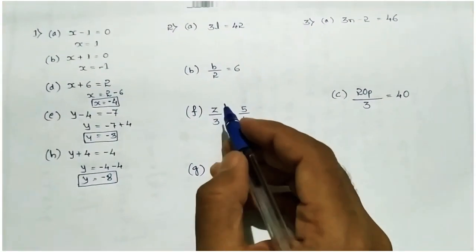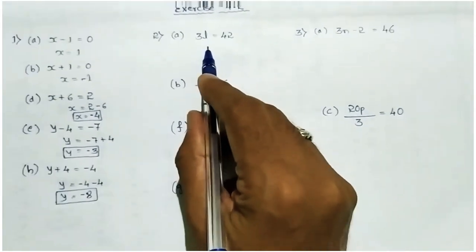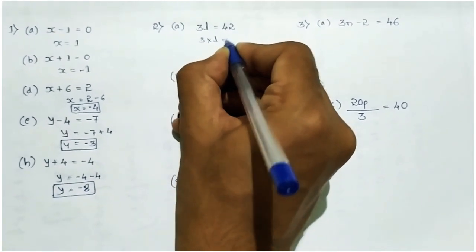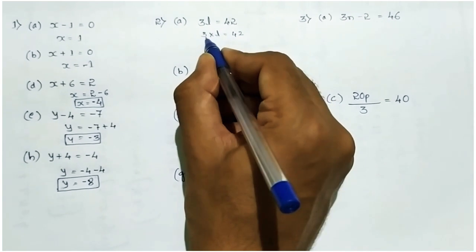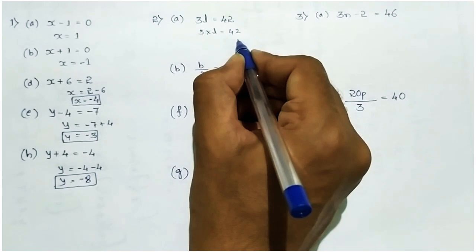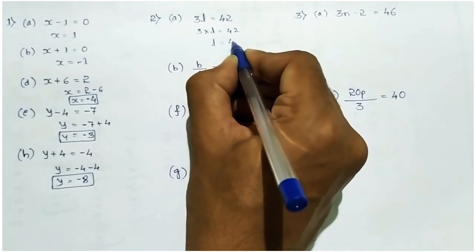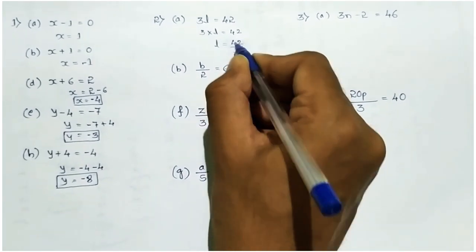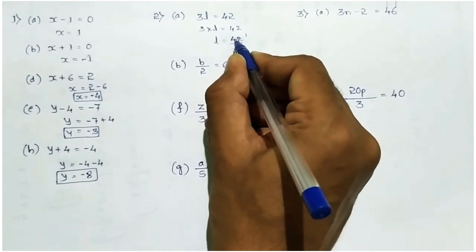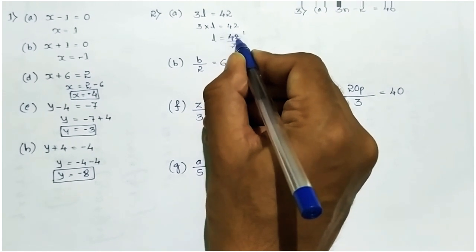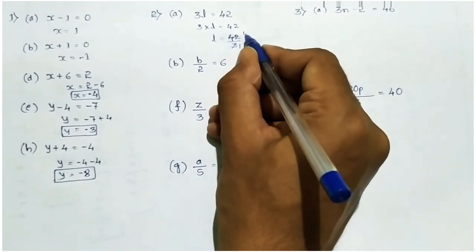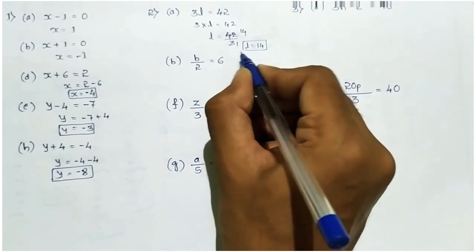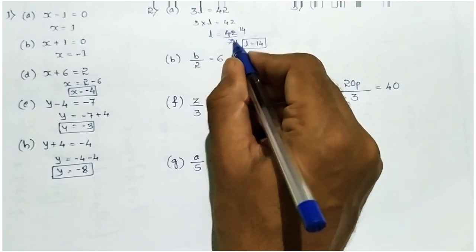Now second main — here multiplication is there. 3l means 3 into l equal to 42. If you take the multiplication number to the right side it becomes divisible: 42 divided by 3. If you cancel it — 3 ones are 3, out of 4 minus 3 gives 1, remaining 12, 3 fours are 12 — so l equal to 14. You can use direct cancellation or the general division method.